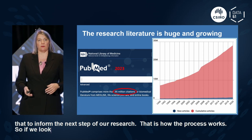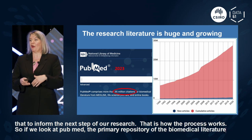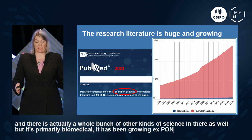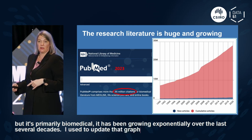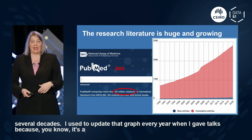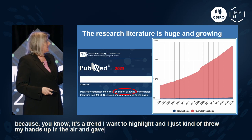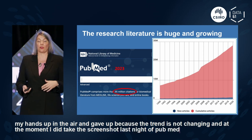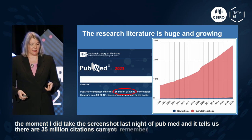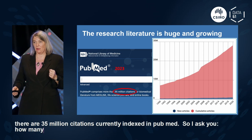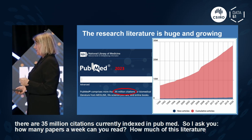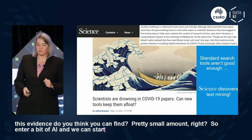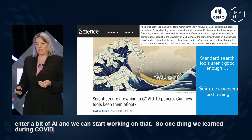PubMed is the primary repository of the biomedical literature, and it has been growing exponentially over the last several decades. I used to update that graph every year when I gave talks, but eventually I gave up because the trend isn't changing. As of last night, there are 35 million citations currently indexed in PubMed. How many papers a week can you read? Pretty small amount, right? So enter a bit of AI — we can start working on that.